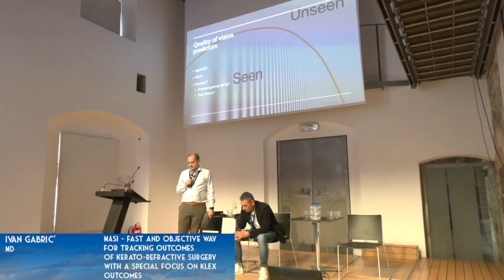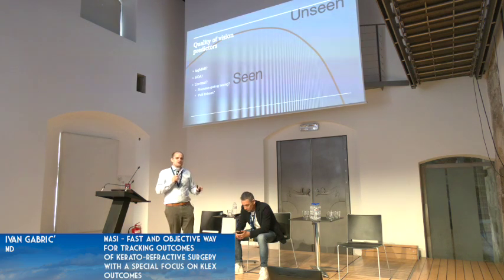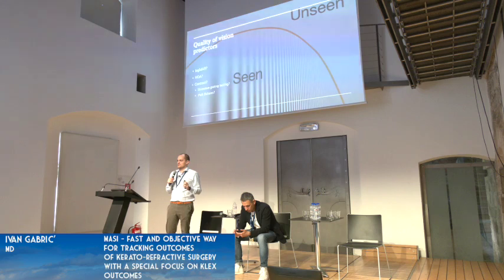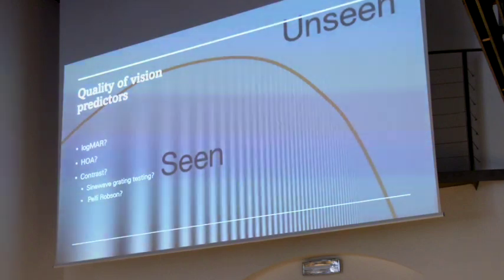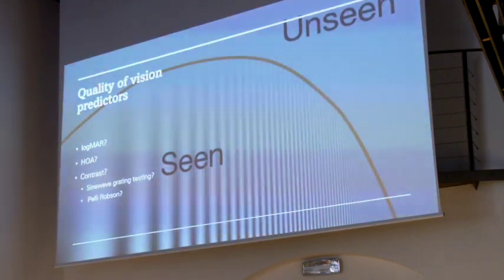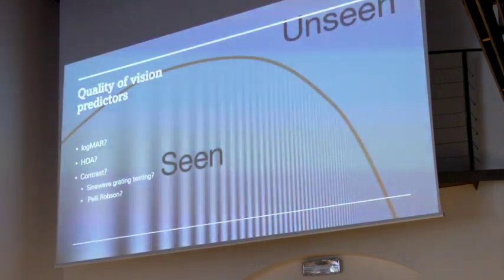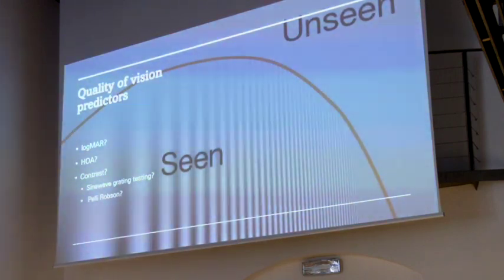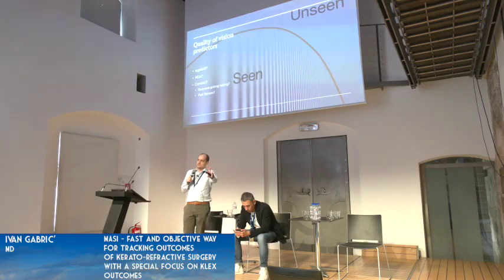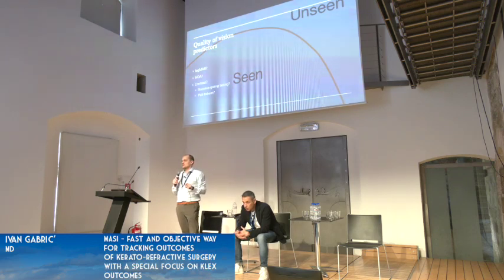So what we did is we tried to find out which objective or subjective factors we can measure that describe this quality of vision that patients were having in that difficult situation. We looked at LogMAR — doesn't really help. They are 20/20 or 0.0 or minus 0.1 and yet they can be unhappy. So it's not a good predictor. HOA — we already know higher order aberrations are not the key. And then we came up with contrast sensitivity.